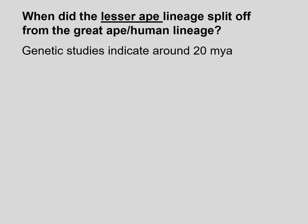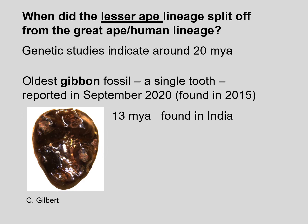When did the lesser ape lineage split off from the great ape-human lineage? Genetic studies indicate that it may have happened around 20 million years ago. But just this month, the oldest lesser ape fossil has been reported at 13 million years ago — a single tooth.